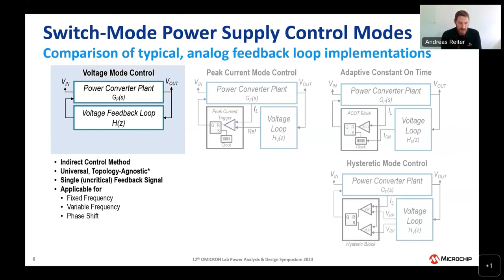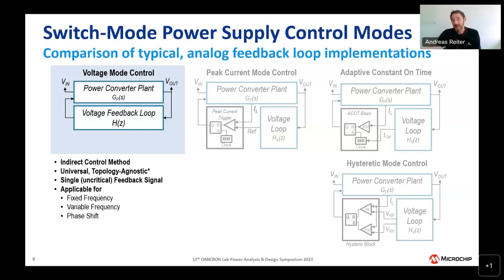Voltage mode is an indirect control mode: when we turn switches on and off, we control the charge of energy into the inductor's magnetic field. When we open the switch, the inductor discharges into the output filter, changing the output voltage. The parameter we observe is the output voltage, but the thing we are controlling is not the one we are looking at — hence indirect control. It's very universal and topology-agnostic: you can control any power supply by just looking at the output voltage and adjusting switch node commutation.